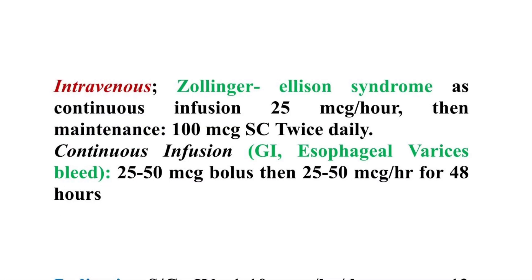Intravenous dose: Zollinger-Ellison syndrome is continuous infusion 25 micrograms per hour, then maintenance dose 100 micrograms subcutaneous twice daily. Continuous infusion for GI esophageal varices bleed: 25-50 micrograms bolus, then 25-50 micrograms per hour for 48 hours.